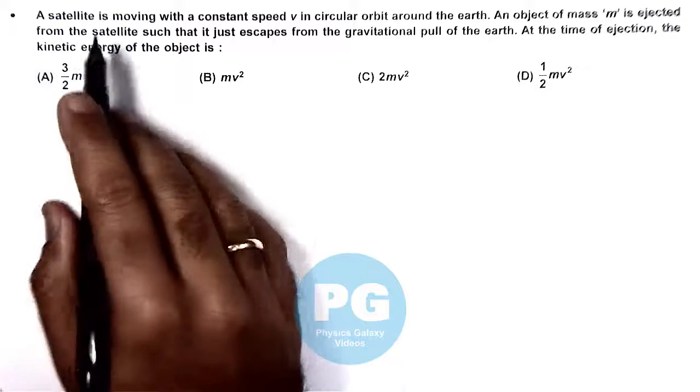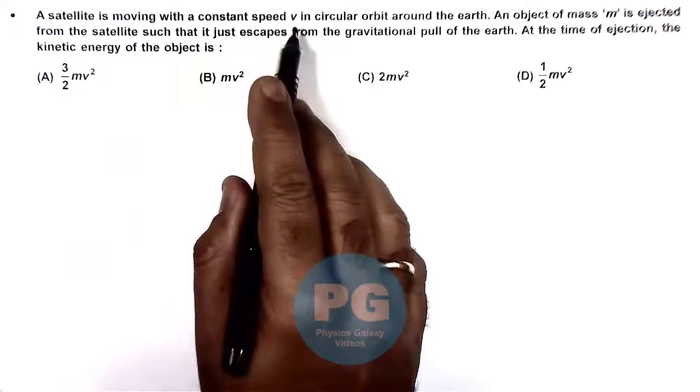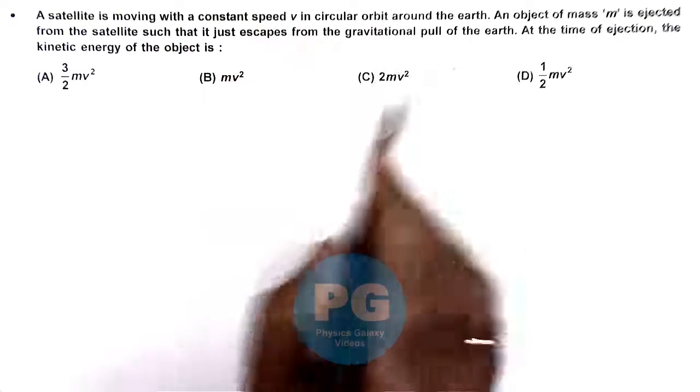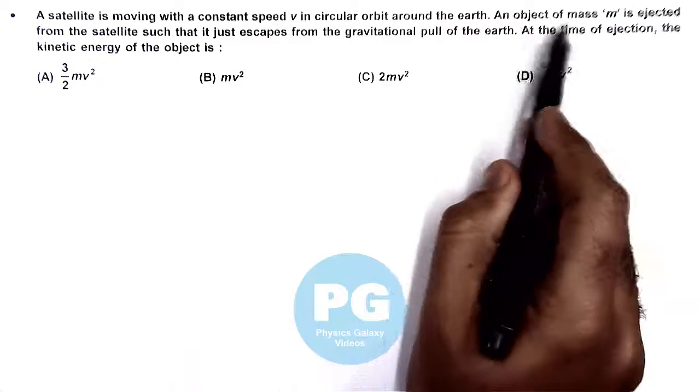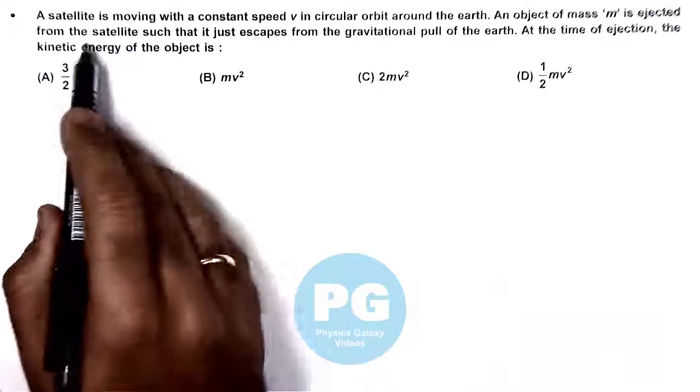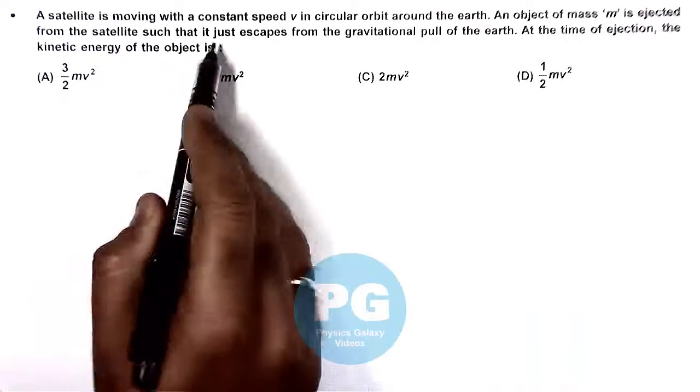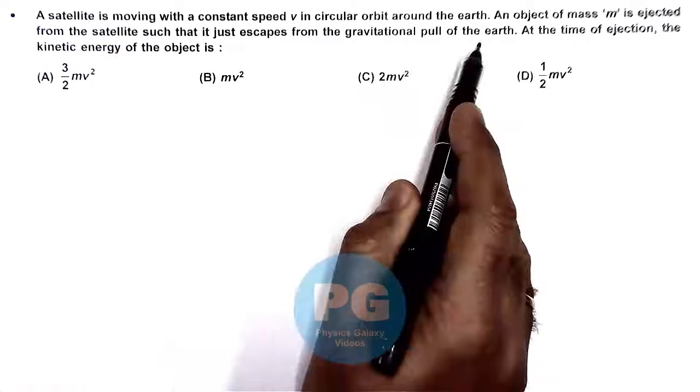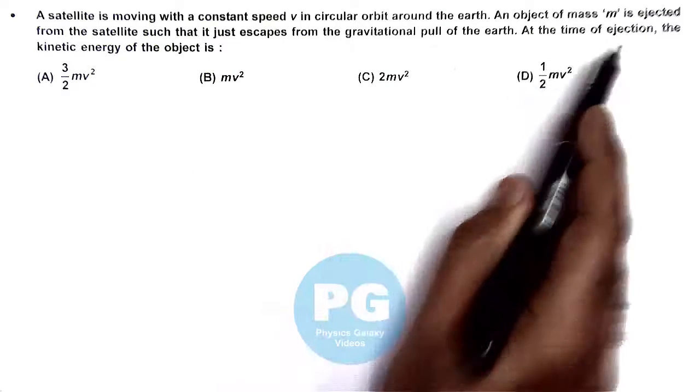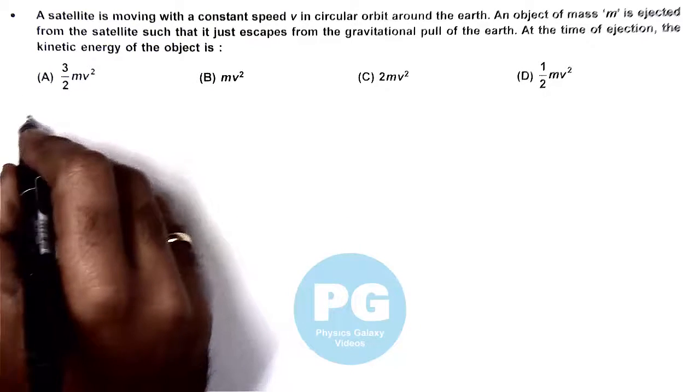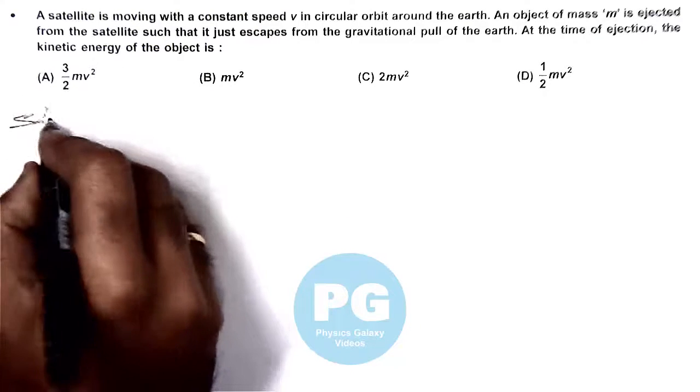In this question, a satellite is moving with constant speed v in circular orbit around the Earth. An object of mass m is ejected from the satellite such that it just escapes from the gravitational pull of Earth. At the time of ejection, we need to find the kinetic energy of the object.